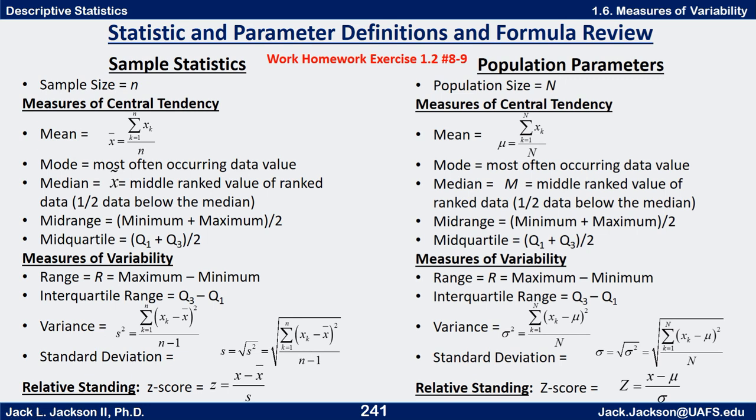The variance is where we first get a difference in the formula. For a population, we use sigma-squared for variance and sigma for standard deviation. Sigma-squared is found by taking the x values minus the population mean mu, squaring them, adding all of them up from 1 to N, and dividing by N. We're averaging or finding the mean of the squared deviations. Then take the square root of that for the population standard deviation.